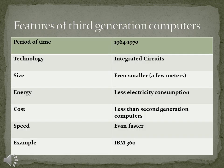Features of third generation computers: the time period was from 1964 to 1970. The technology used was integrated circuits. Size was even smaller than the previous generation. Energy: again, less electricity consumption. Cost: less than second generation computers, so cost was even reduced. Speed was even faster than the second generation computers. An example is IBM 360.